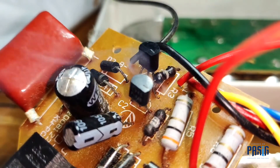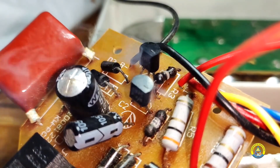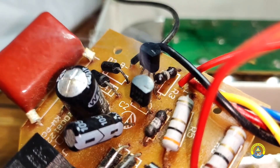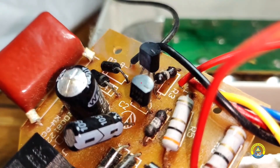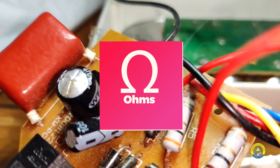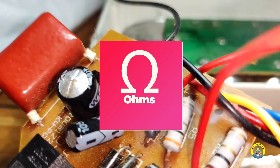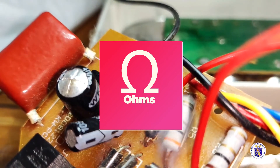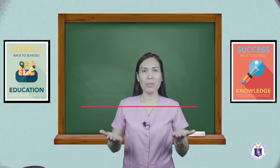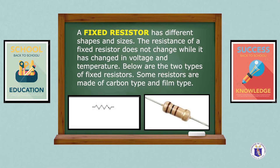The resistor is made up of carbon, an insulator that usually is ceramic. The resistor's value is in ohms. A fixed resistor has different shapes and sizes. The resistance of a fixed resistor does not change while there is a change in voltage and temperature.